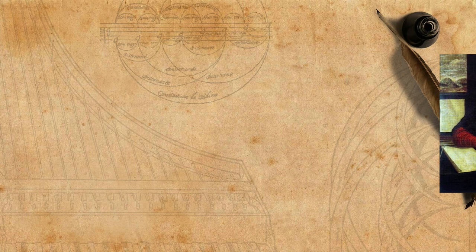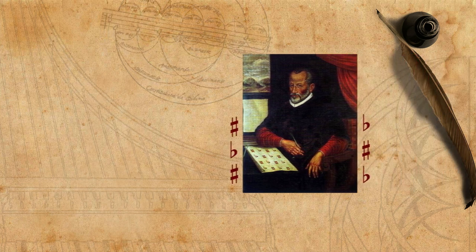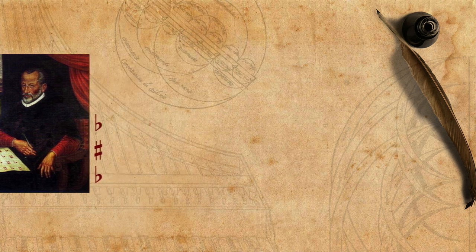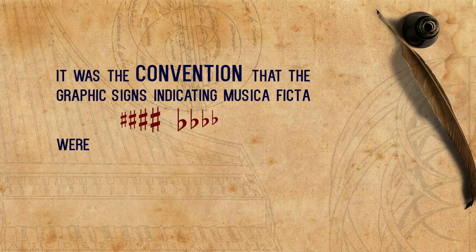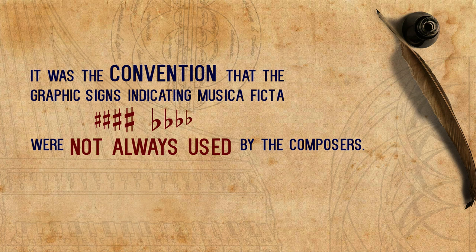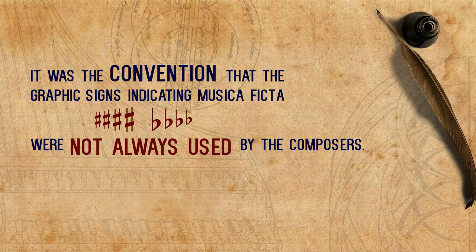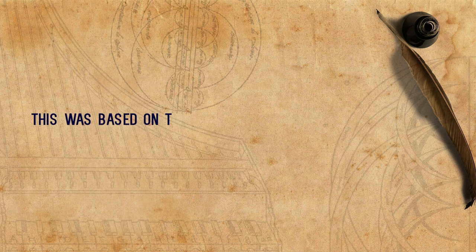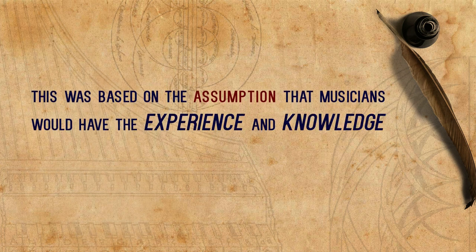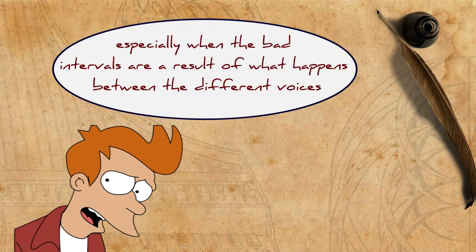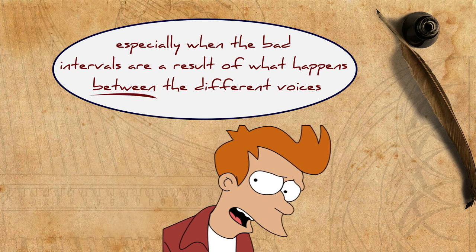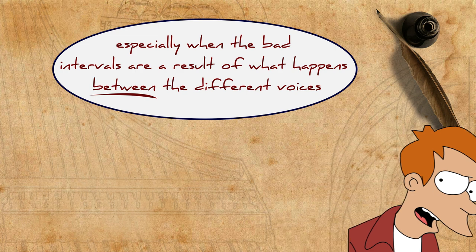So composers could use ficta notes in order to avoid bad intervals, and also for other reasons. But how is this a problem for anyone? The material presented up until now was information needed for composers — it described ways they could or must use musica ficta when composing music. But as it so happened, it was the convention that the graphic signs indicating musica ficta, that is, sharps and flat signs, were not always used by the composers. Some wrote more signs than others, but generally there was no agreement on when, where and why some signs are written and some not. This was based on the assumption that musicians would have the experience and knowledge to decide when and where a ficta could or must be used. Not so surprisingly, this was not so clear to everyone — especially when the bad intervals are a result of what happens between the different voices, when the singers are not able to anticipate them, as they only had their own part.